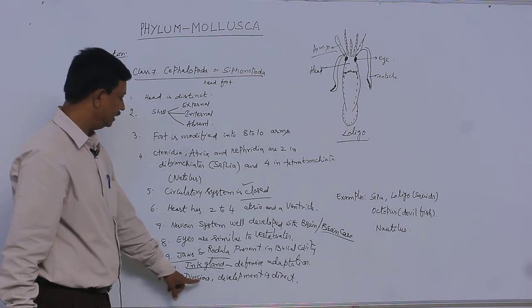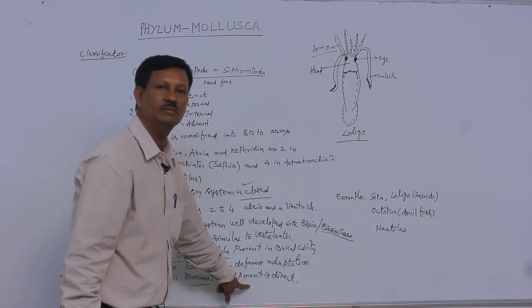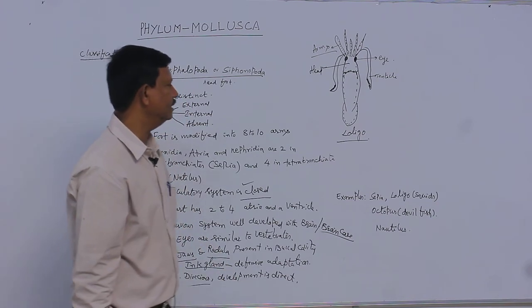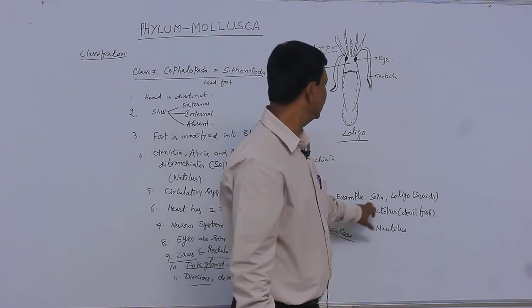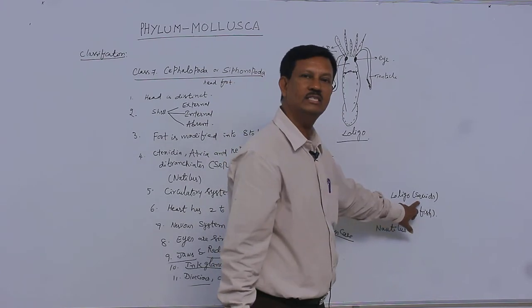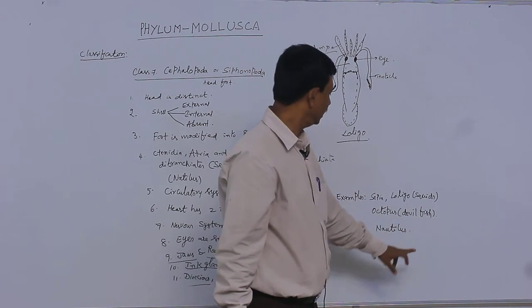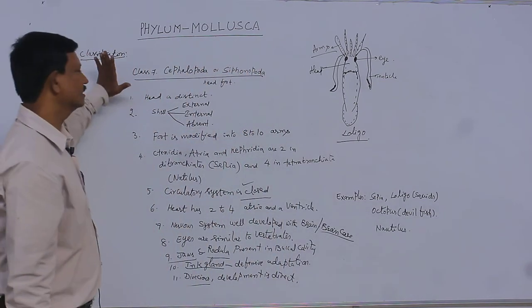Development: there are no larval forms here. That's why development is direct development. Examples include Sepia, which is commonly known as cuttlefish; Loligo, which is known as squid; Octopus, which is known as devil fish; and Nautilus. These are the examples that are considered in this class.